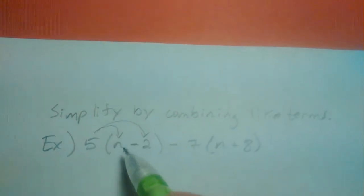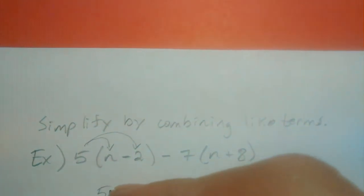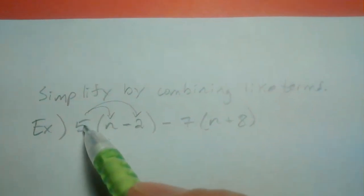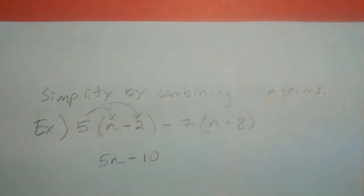I'm going to draw little arrows indicating what I'm multiplying with. So 5 times n gives me 5n, and 5 times 2 gives me a 10, and then I'm going to subtract their results.